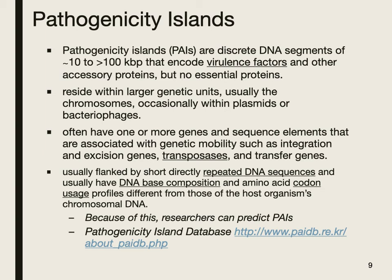Pathogenicity islands have specific characteristics that help us identify them. They are DNA segments usually between 10 to 100 kilobase pairs — relatively small amounts of genetic information — and the genes code for virulence factors, either a single gene or in many cases multiple genes. They can also carry genes coding for transposase, so we can get transfer of the genes to different locations, making them naturally highly mobile genetic segments. They generally reside within larger genetic units — usually chromosomes.